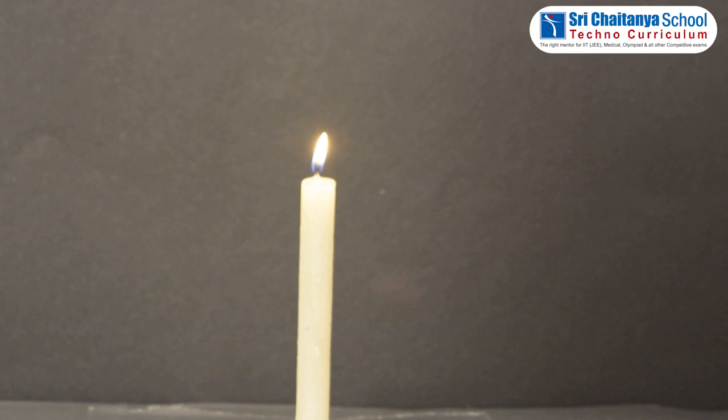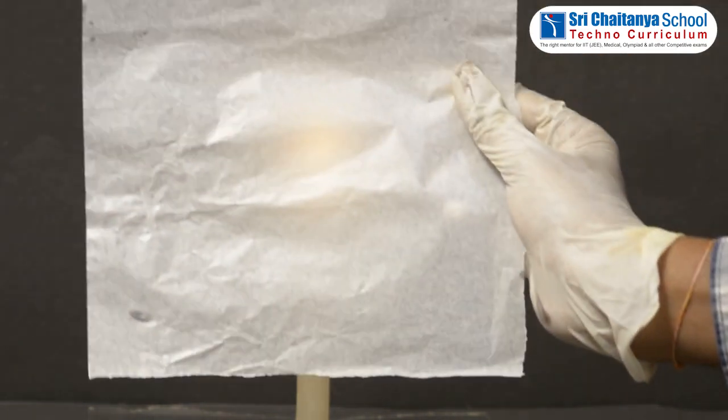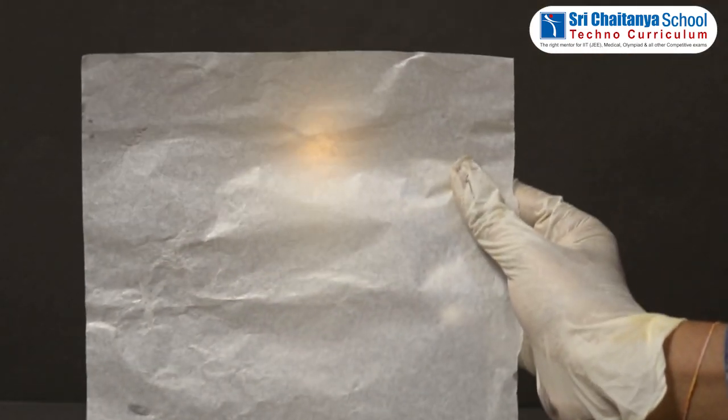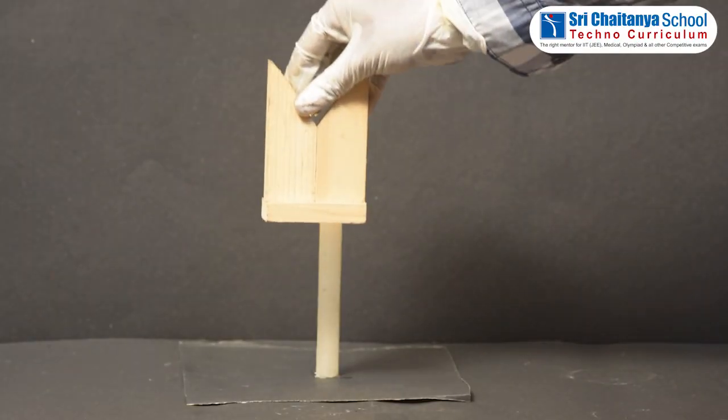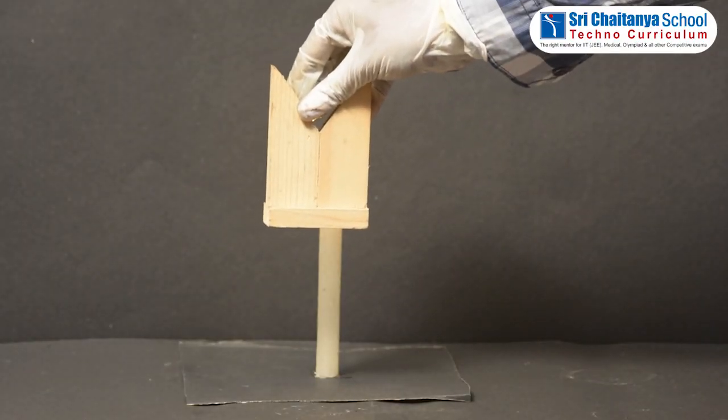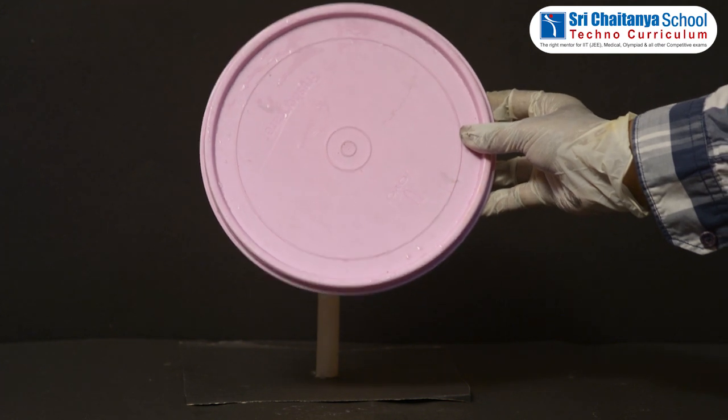Then, place a tracing paper opposite to the candle and observe. Then, repeat the same with a wooden sheet, a colored plastic sheet.